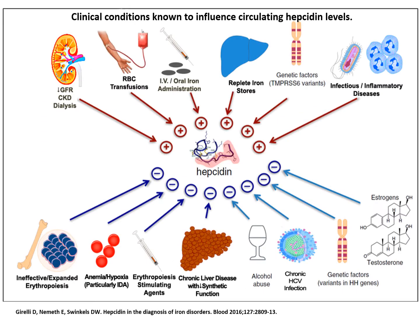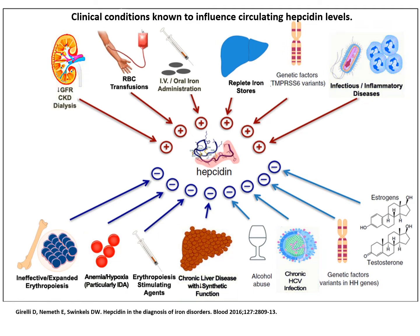Many factors can contribute to hepcidin regulation, but generally fall into a few categories. First, iron levels — whether additional iron is introduced into the body or iron stores are satisfactory. Second, inflammation — whether it's an infectious disease or organ dysfunction. Third, erythropoiesis — whether it's due to too few red blood cells or oxygen demand, the stimulation of erythropoiesis, or transfusing the product of erythropoiesis, red blood cells.